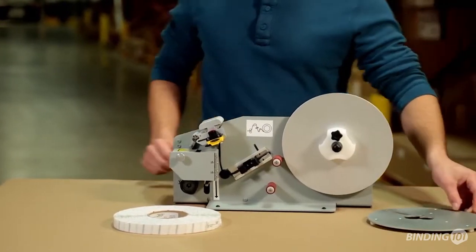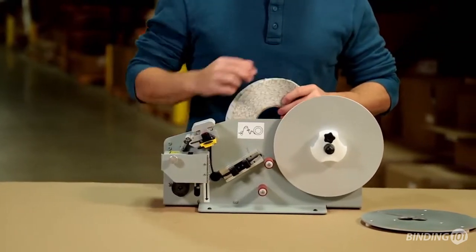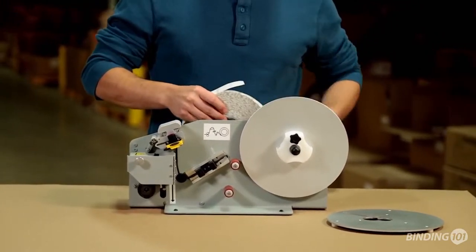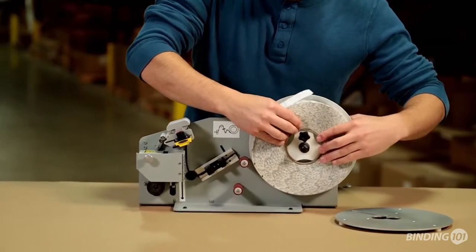Loosen the supply reel clamp knob on the front of the EconoDot and remove the plate. Load the adhesive roll onto the reel, ensuring the liner turns clockwise.